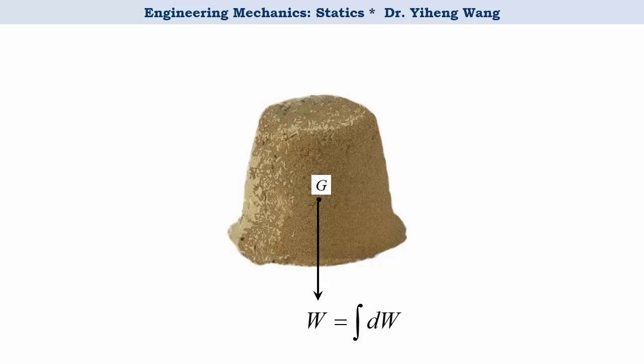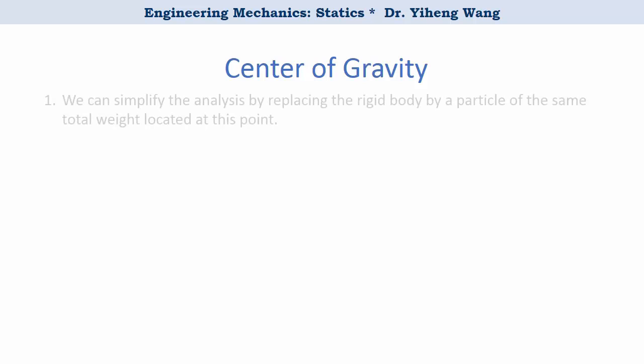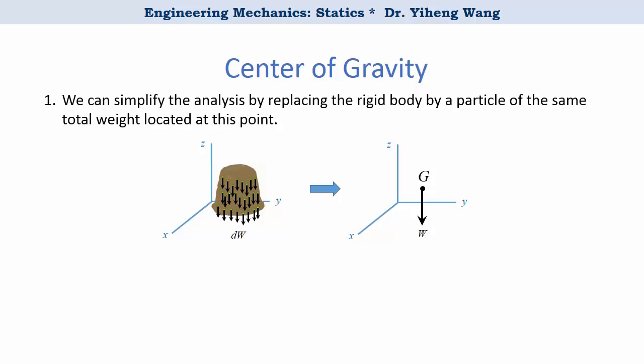The total moment of the original distributed load summarized about any axis passing through this point is zero. So why do we want to find the center of gravity? If we do know its location, in some cases it is convenient to replace a rigid body by a particle located at this point. For a rigid body in a general near-Earth situation, when gravitational acceleration g can be considered constant at about 9.81 m/s², the center of gravity is the same point as the center of mass. It is a unique point fixed in relation to the body — if you move or rotate the body, the center of gravity stays at the same point relative to it.